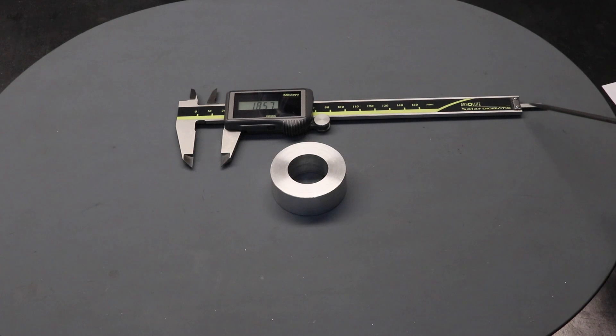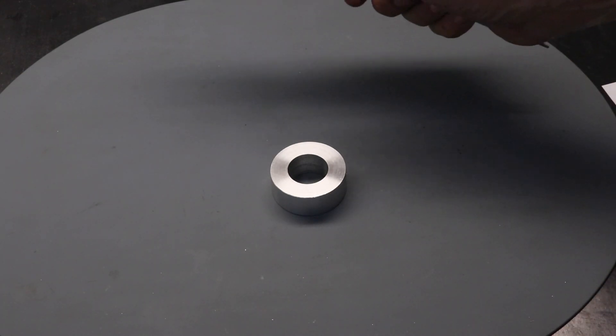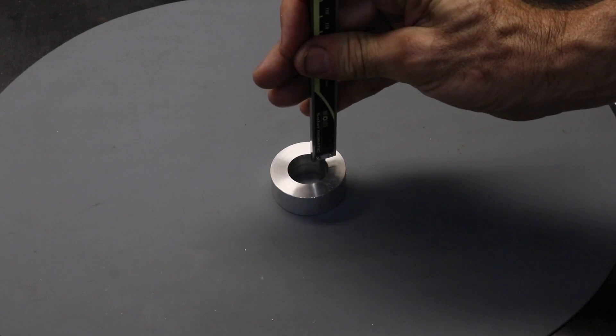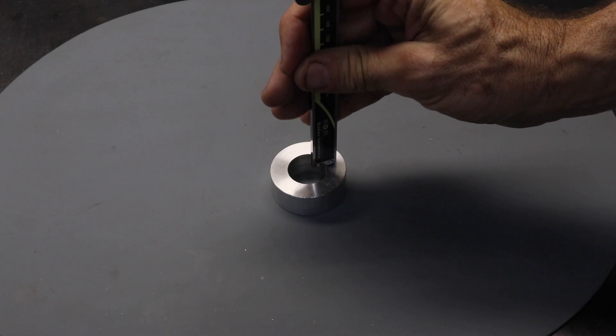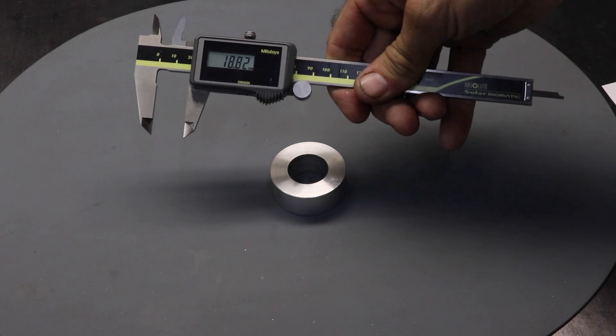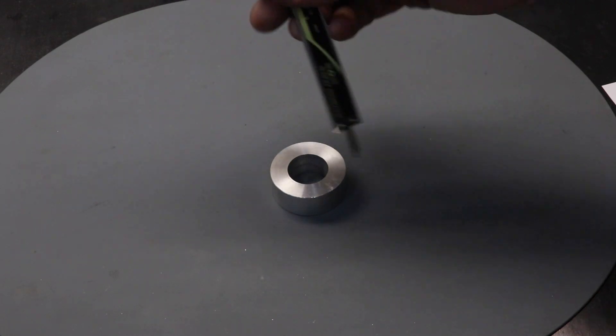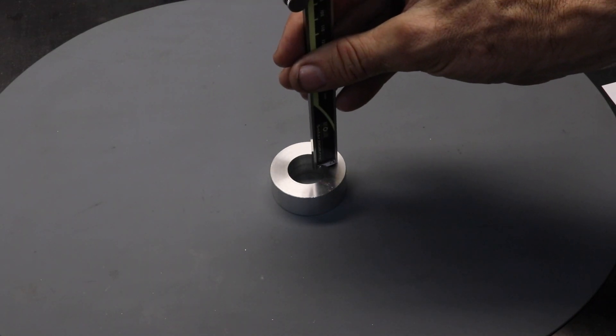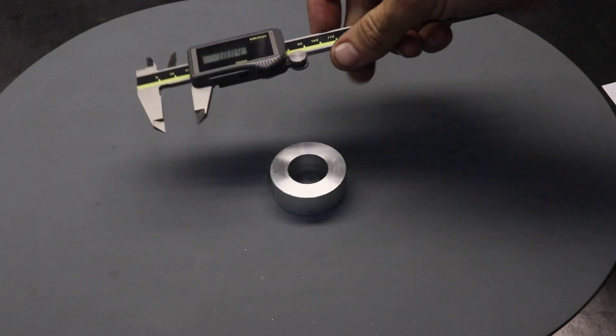To measure depth, you can use this portion of the caliper. For example, if I want to measure the depth of this bore, I just simply push down on the caliper and I can read off the depth. It's sometimes quite difficult to align the calipers correctly in the bore, and it is important that you get good alignment for an accurate measurement.